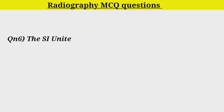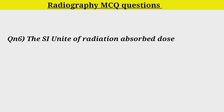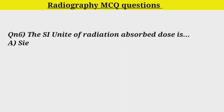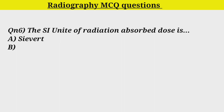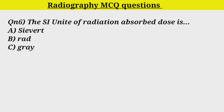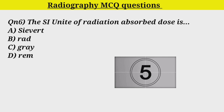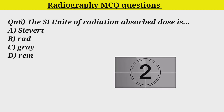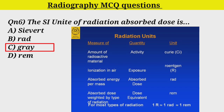Q6. The SI unit of Radiation Absorbed Dose: Option A. Sievert, Option B. Rad, Option C. Gray, Option D. Rem. Correct answer is Option C. Gray.